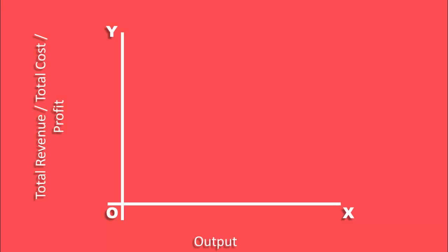In this graph, total revenue, total cost, and profit are measured along the y-axis, output along the x-axis.